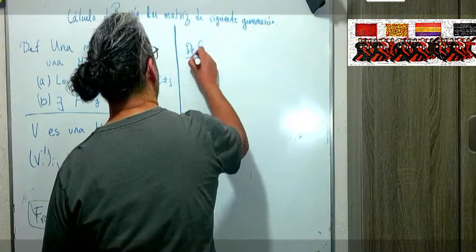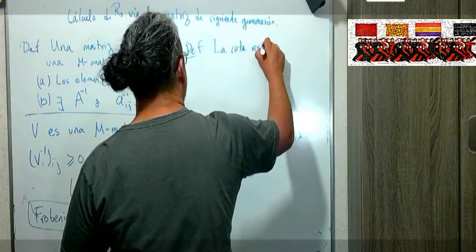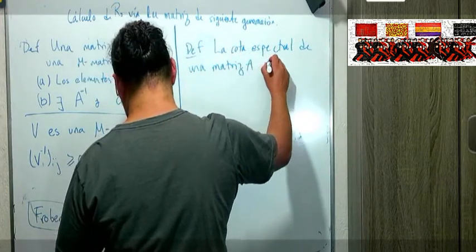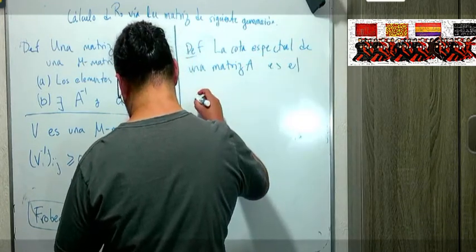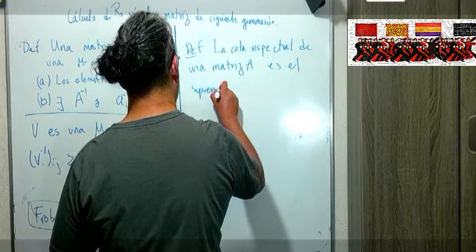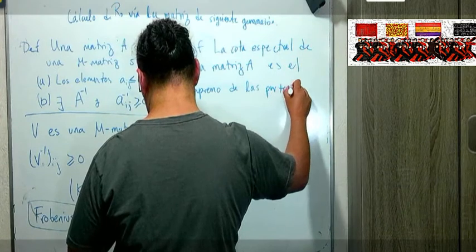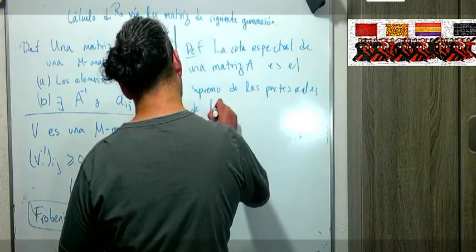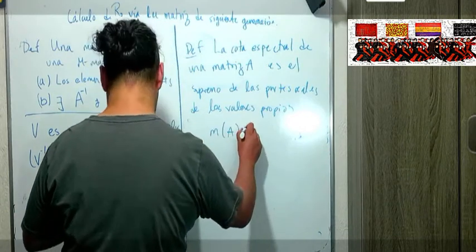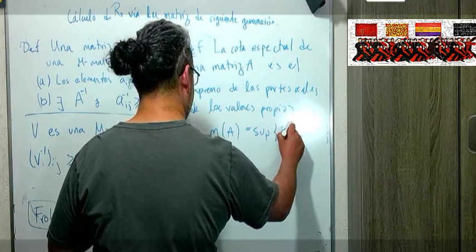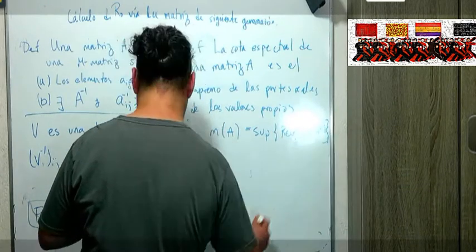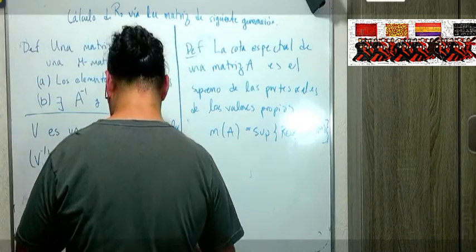Entonces el más grande de los valores propios de esa matriz K de siguiente generación pues es la que nos va a dar el parámetro R0 para nuestro sistema epidemiológico. Voy a poner un par de definiciones más y vemos un par de ejemplos antes de terminar. Vamos a definir la cota espectral de una matriz A es el supremo de las partes reales de los valores propios. Este se le llama s(A) y este es el supremo de la parte real del λ donde λ está en el espectro de A.